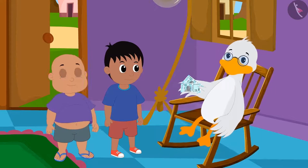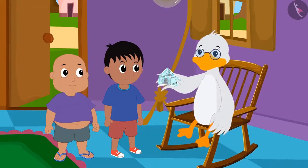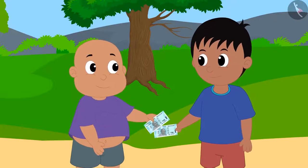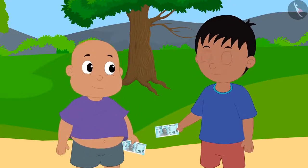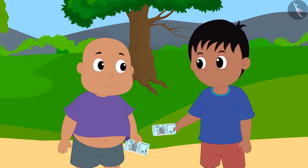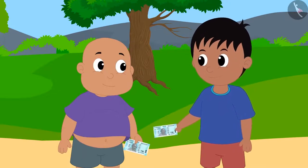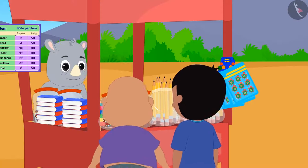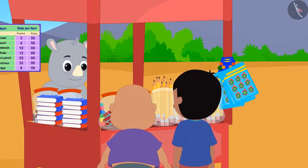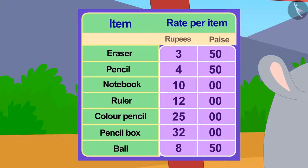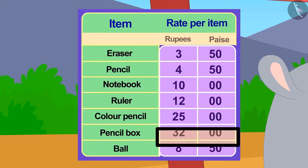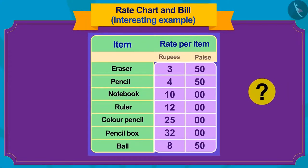Uncle gave Raju and Bablu 50-50 rupees for helping him get some goods from the market. There is a bet between Raju and Bablu that whoever buys the most number of items from his 50 rupees will be the winner. Now Raju and Bablu reach Gaggu's shop, where a board is installed with the prices of goods written on it. Children, do you remember what we call such a board?